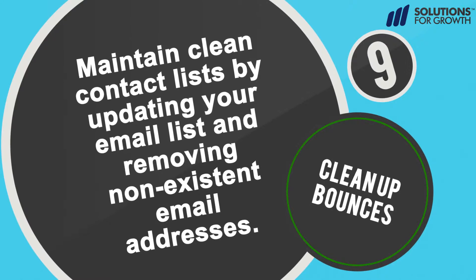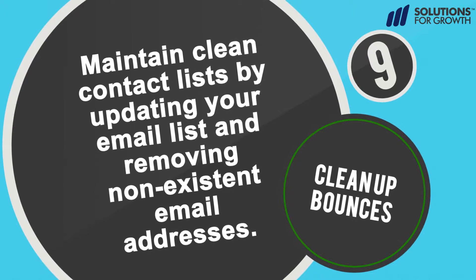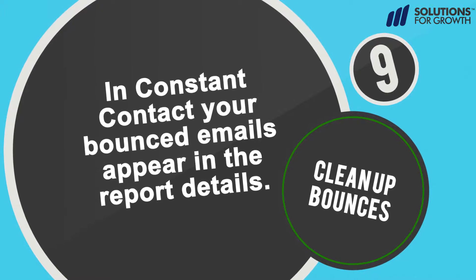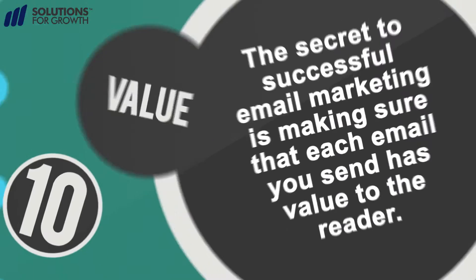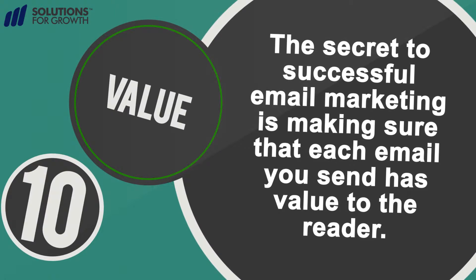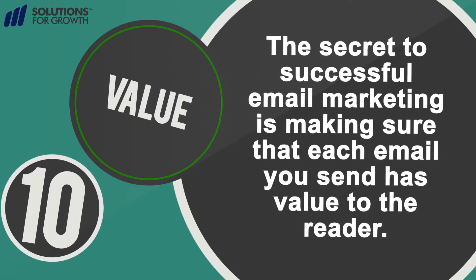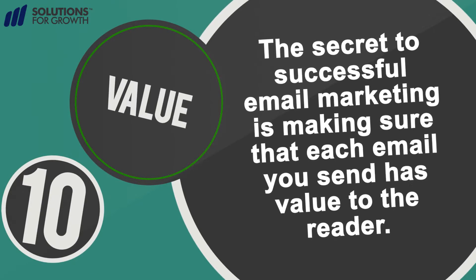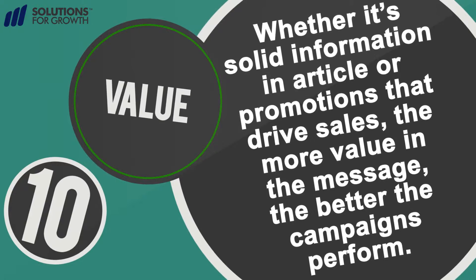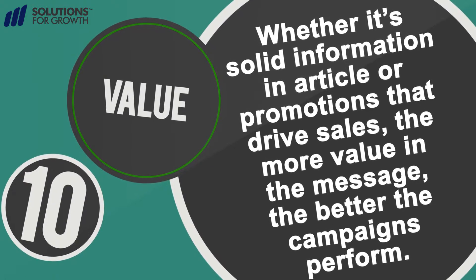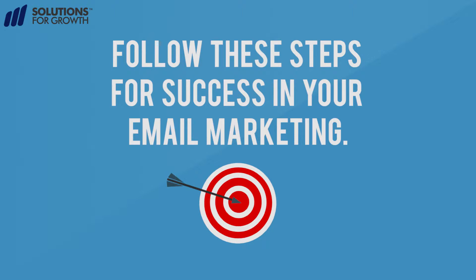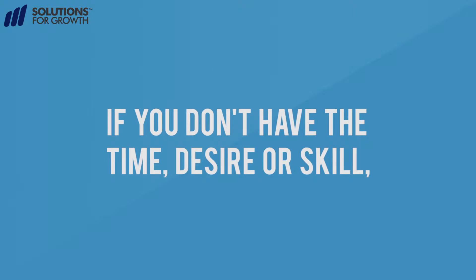Number nine: clean up bounces. Maintain clean contact lists by updating your email list and removing non-existent email addresses. In Constant Contact, your bounced emails appear in the report details. Number ten: value. The secret to successful email marketing is making sure that each email you send has value to the reader, whether it's solid information in an article or promotions that drive sales — the more value in the message, the better the campaigns perform.